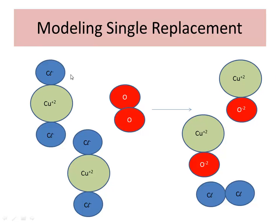The ion oxide has a negative 2 charge. Copper has a positive 2 charge. The element oxygen has no charge, but the ion that oxygen forms — oxide — is a negative 2. That's how you can tell it goes with the copper, because the positives go with the negatives. Opposites attract.